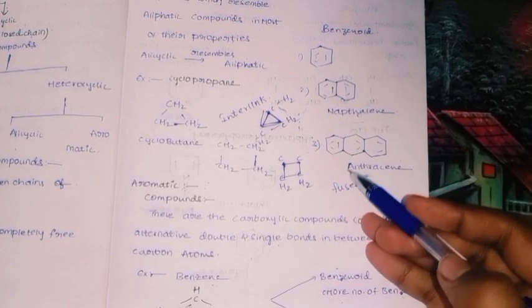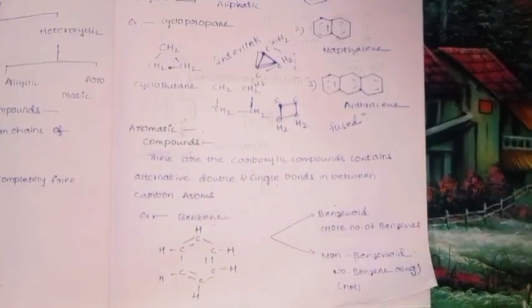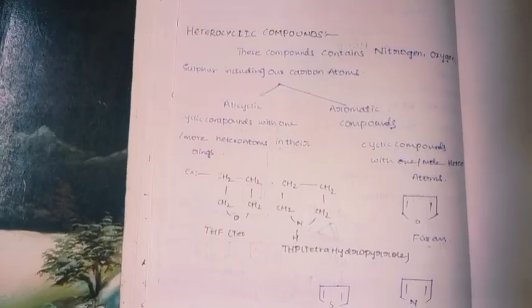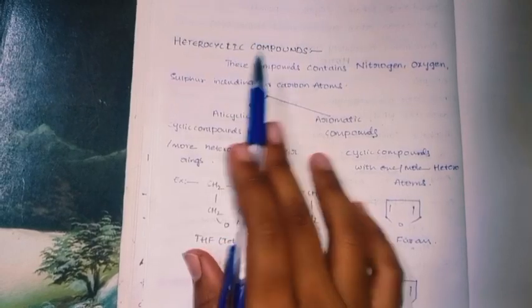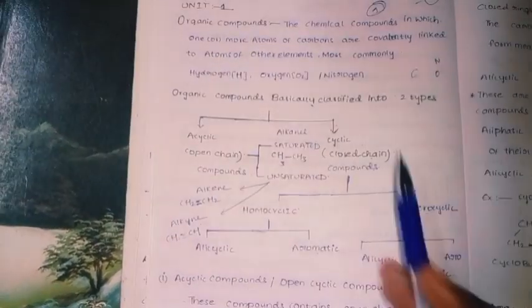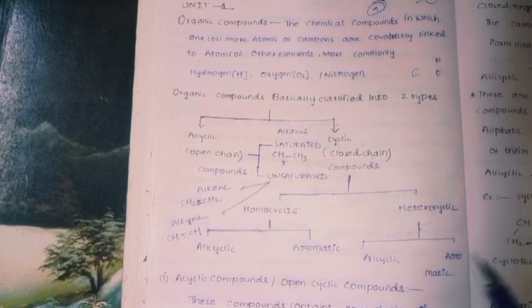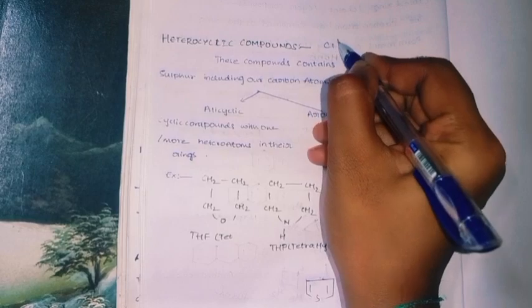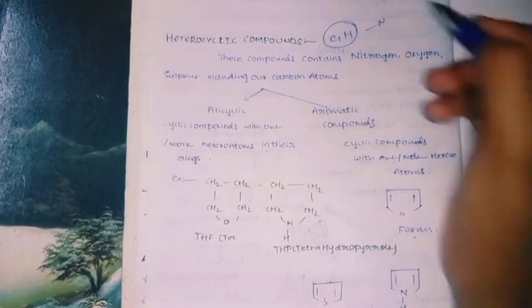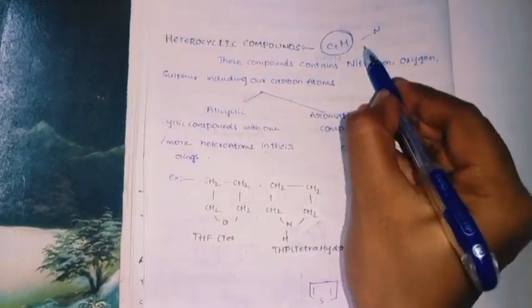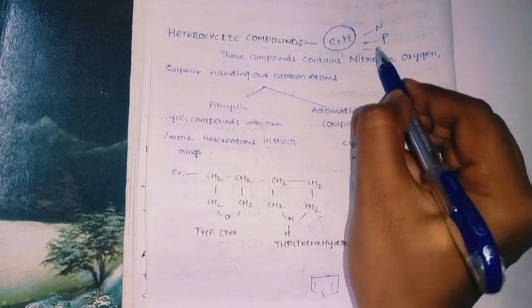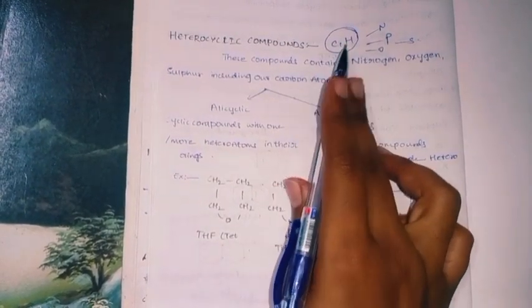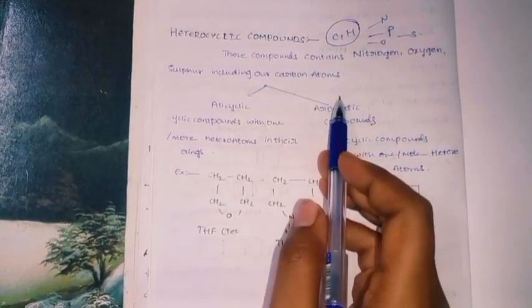These three are examples of benzenoid compounds. As for non-benzenoid compounds, azulene is an example of a non-benzenoid structure.